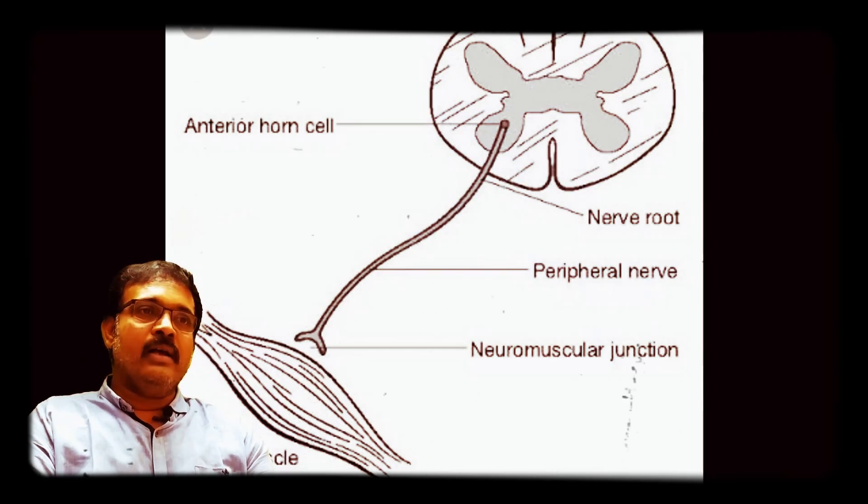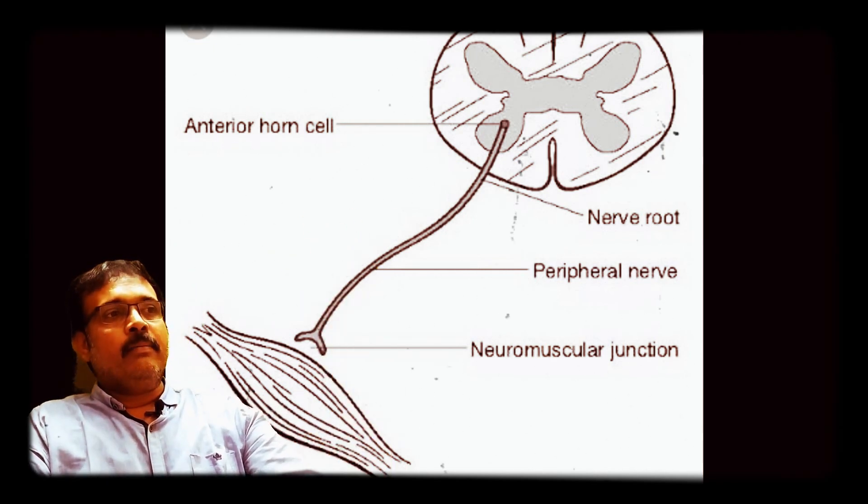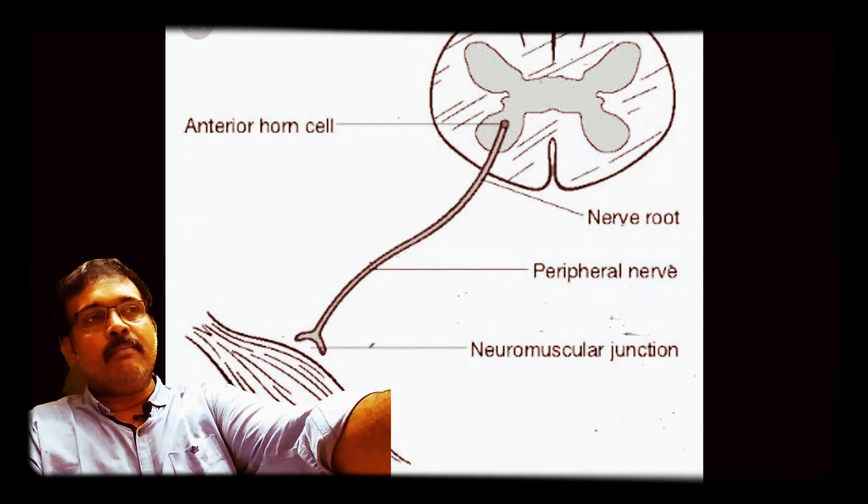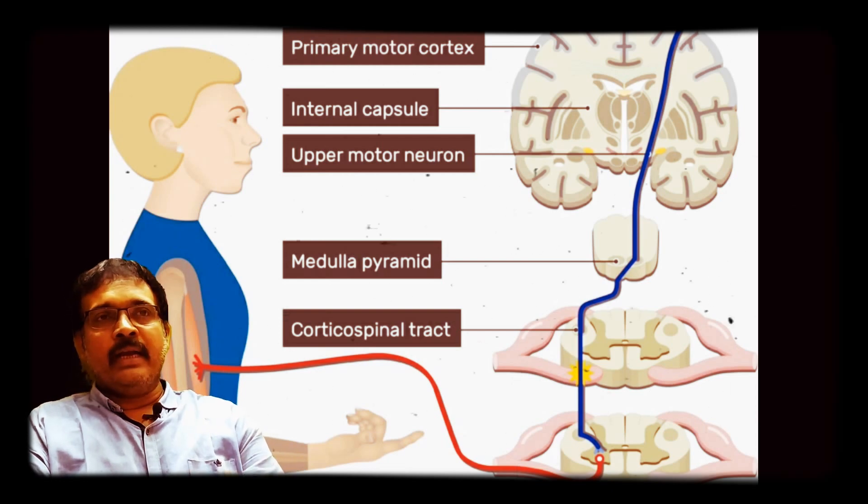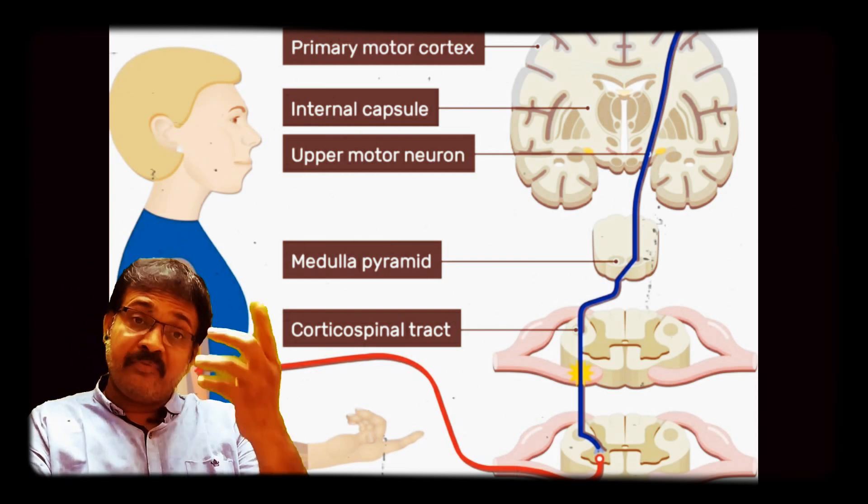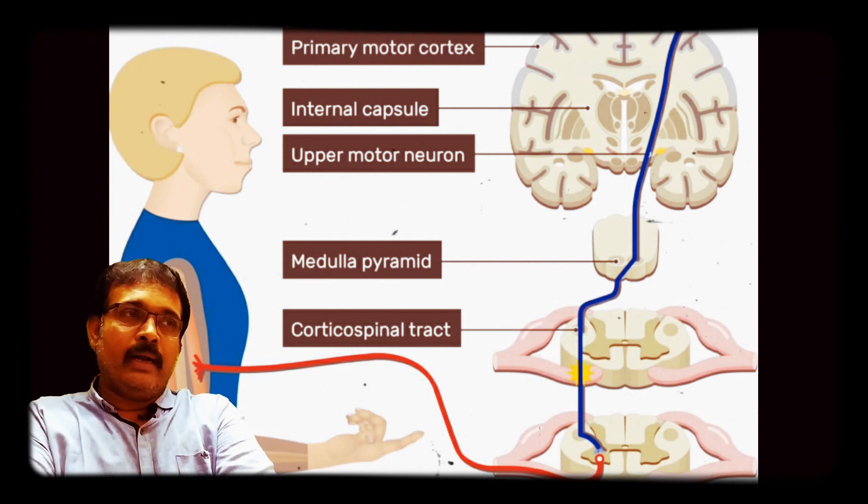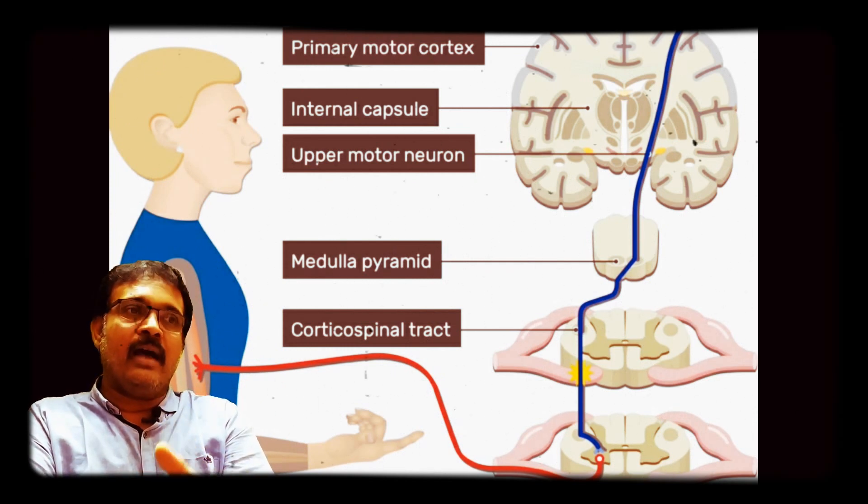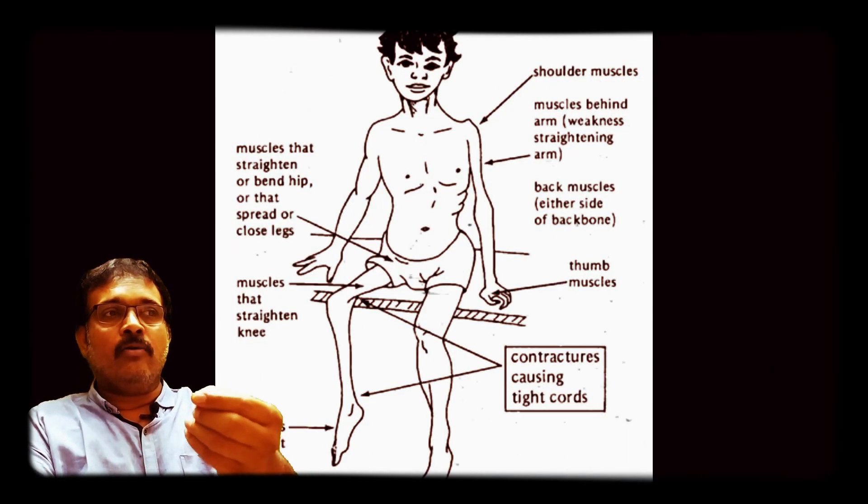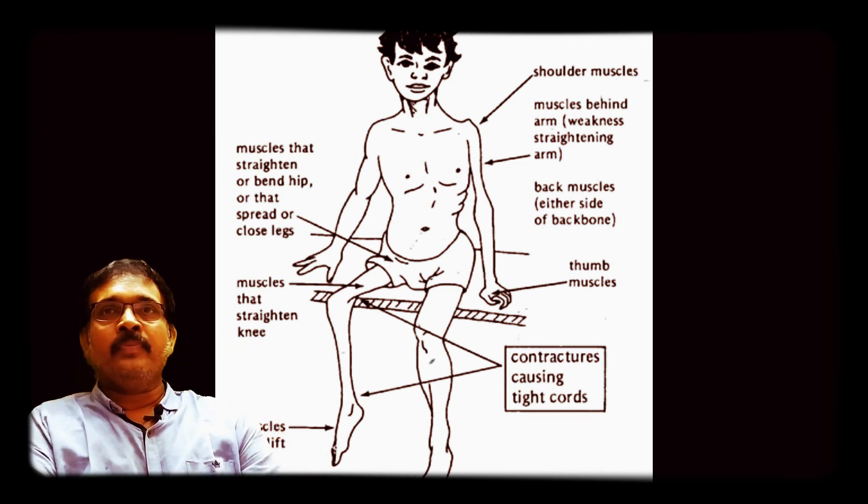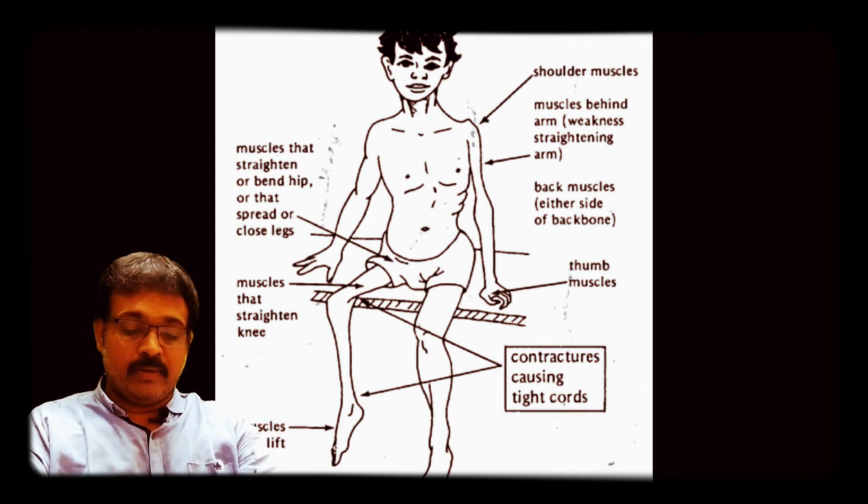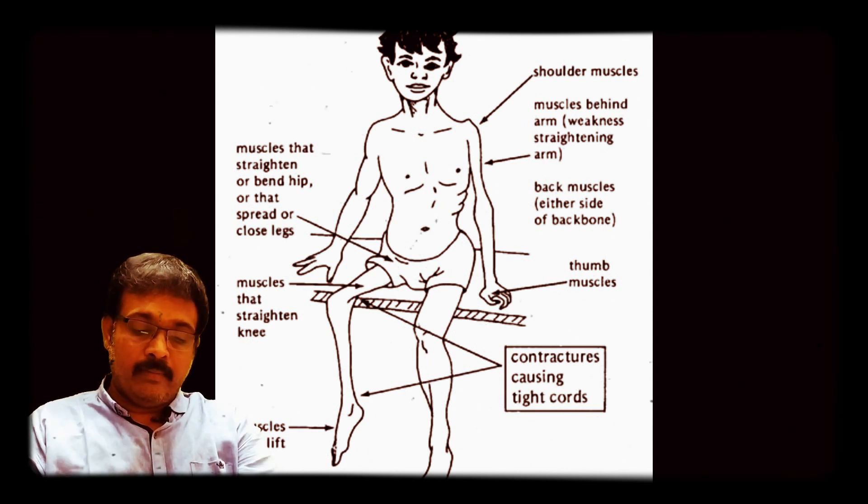Anterior horn cell disorder - the anterior horn is responsible for sending impulses to the muscle and maintaining the voluntary function. Pyramidal tract is the major source. Pyramidal tract to the anterior horn cell - the impulses are transmitted to the muscle fiber, it produces movement in the muscle, producing voluntary movements. Anterior horn cell infections are more prone like poliomyelitis. In poliomyelitis, the anterior horn cell infection means the impulse does not go to the muscle fiber. Automatically, muscle wasting and muscle weakness occur. So poliomyelitis is the anterior horn cell disorder.